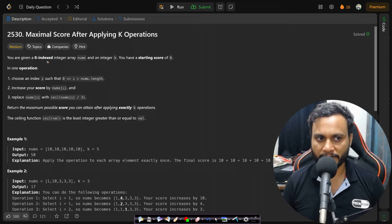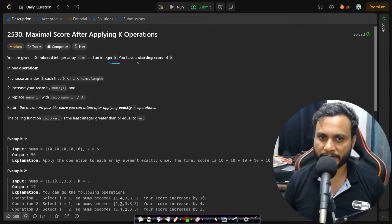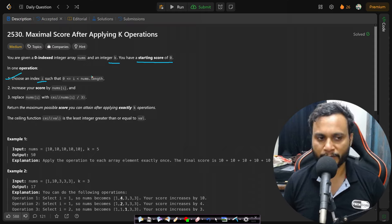In this problem you are given a zero indexed integer array nums and an integer k. You have a starting score of zero. In one operation you can choose any index i from the given array and increase your score starting from zero.